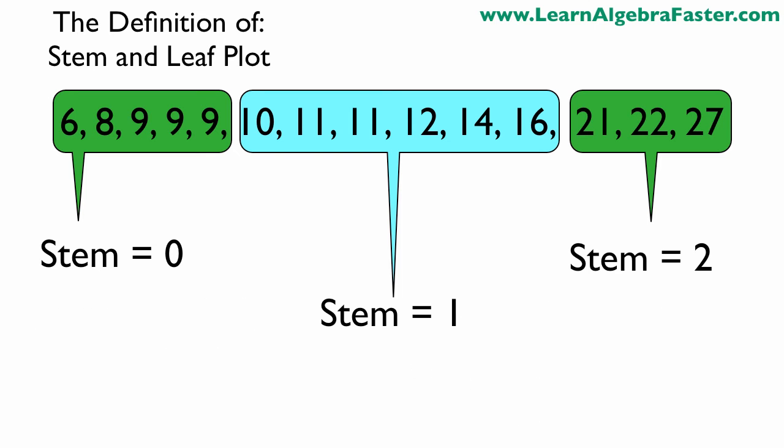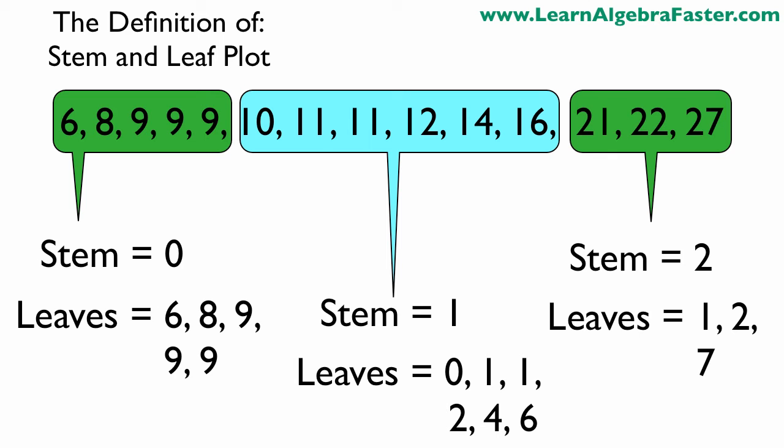Now we have the stems taken care of, let's look at the leaves. In the first set we have leaves of 6, 8, 9, 9, and 9. Notice that 9 is represented three times so we actually have to list it three times, and that way we know that three separate people answered it this way - we have three individual data points named 9. If we don't list them all then people won't know that we have them. In the middle we have leaves of 0, 1, 1, 2, 4, and 6. And in the third set for the third stem we have leaves of 1, 2, and 7.